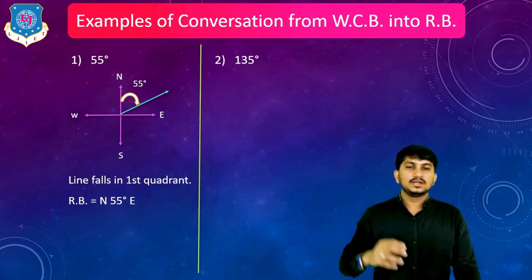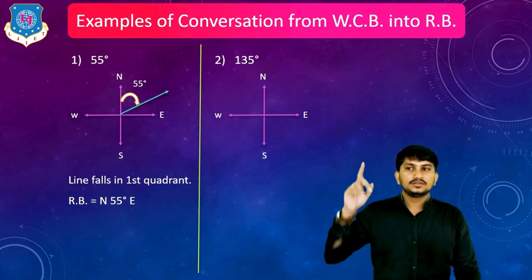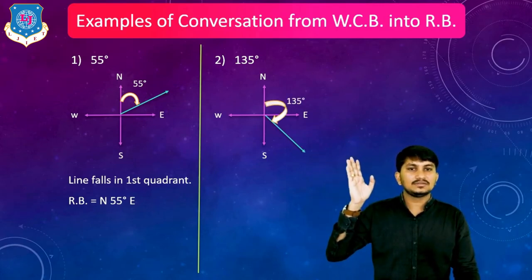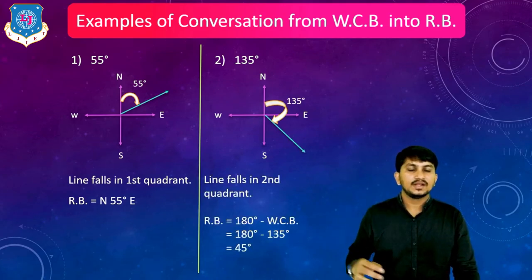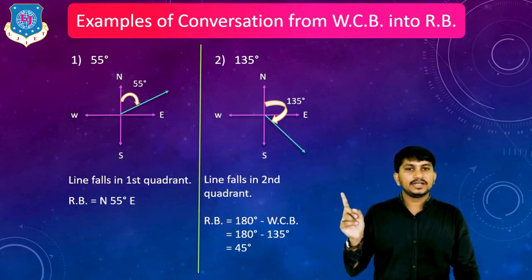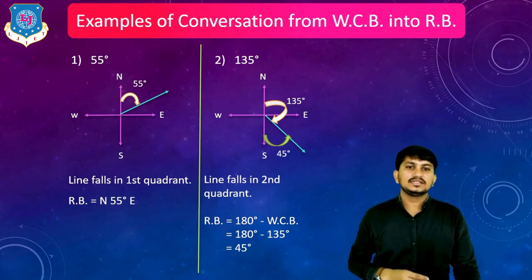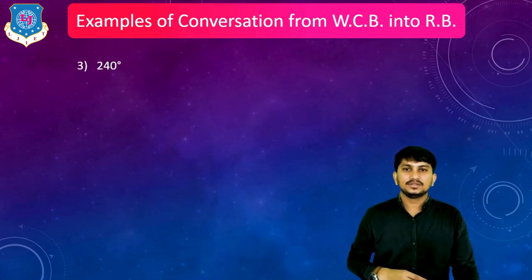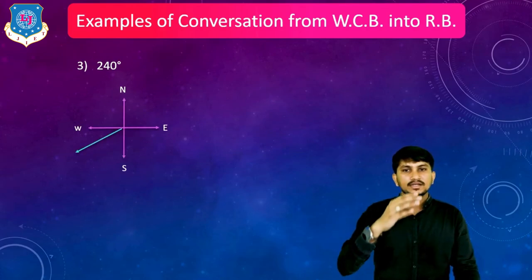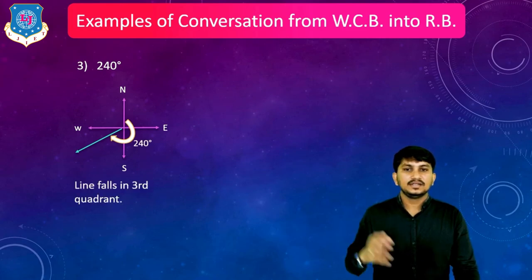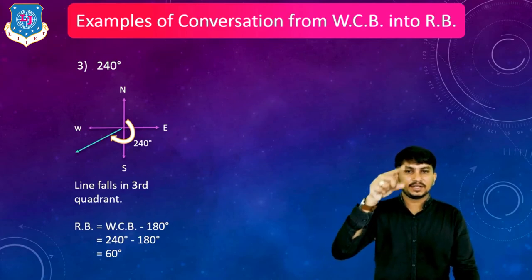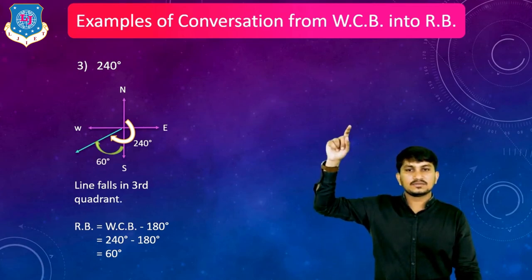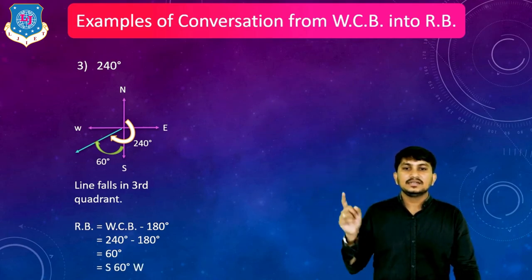Second example: suppose WCB equals 135 degree. 135 lies in the second quadrant. RB equals 180 degree minus WCB, which is 180 minus 135 equals 45 degree. So RB is written as South 45 degree East. Third example: suppose WCB equals 240 degree. 240 lies in the third quadrant. RB equals WCB minus 180 degree, which gives 60 degree. Since the angle starts from south towards the west side, it is written as South 60 degree West.